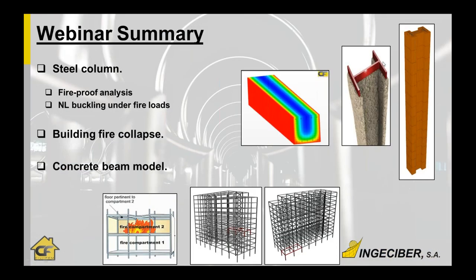In this webinar, we are going to present three different examples. The first example is a steel column. First, we are going to perform only thermal analysis so we can design the fire insulation around the steel part — checking the thickness of this insulation and the time for the steel part to reach certain temperatures, keeping it under an allowable temperature for a certain time.